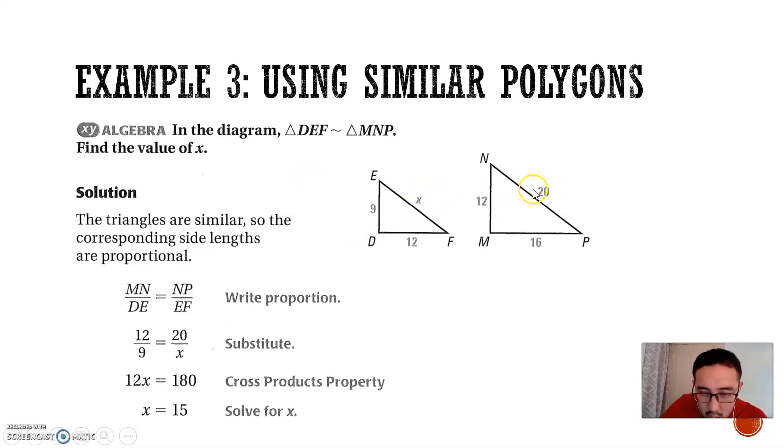If you had chosen to solve this another way, you would have still obtained the same answer. Let's say you said x to 20 equals 12 over 16. You still would have gotten the same answer.